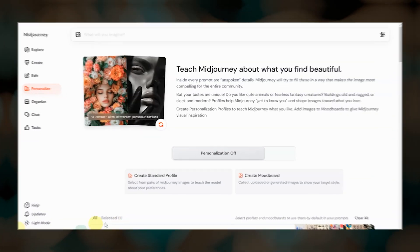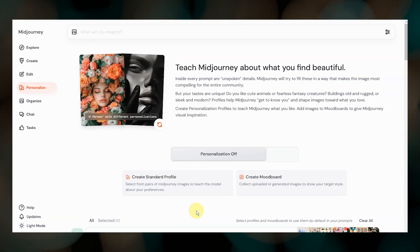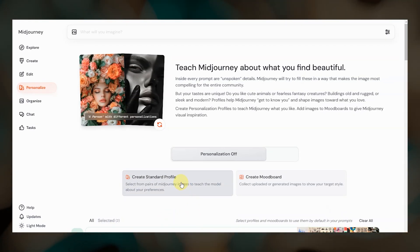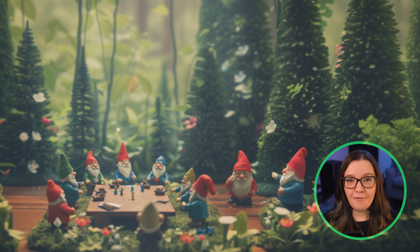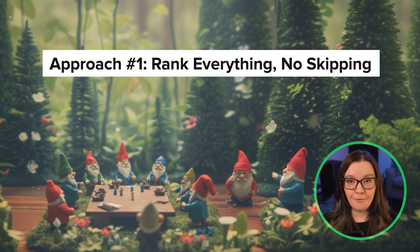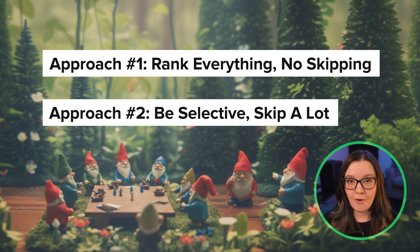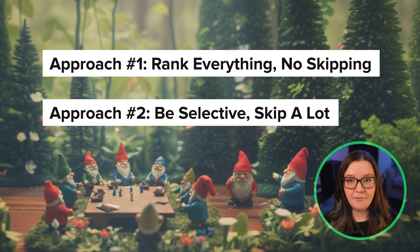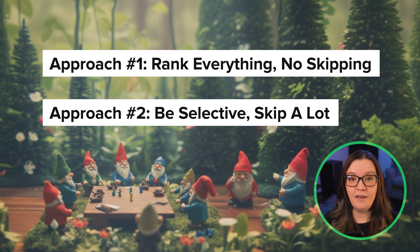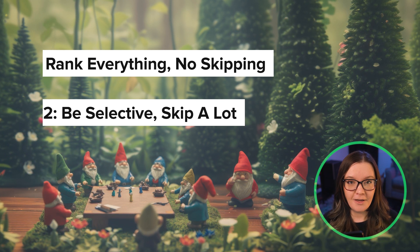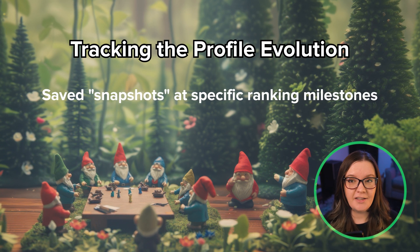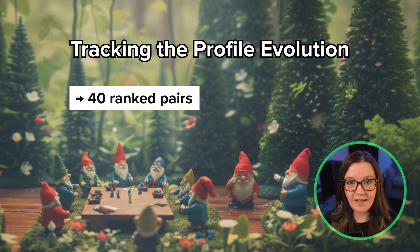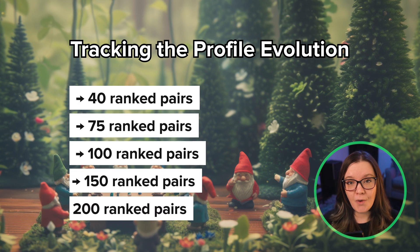Today we're putting this to the test with a little experiment. I created two distinct personalization profiles to test different ranking approaches using the standard profile button on the personalization page. For the first profile I ranked every image pair — no skipping. For the second profile I was very selective, only choosing images I genuinely liked both the content and aesthetics of. To track how these profiles evolved I saved snapshots after ranking 40, 75, and up to 200 image pairs.